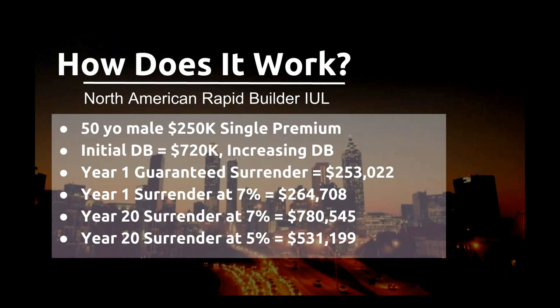Let's look at an example. A 50-year-old male puts $250,000 into this contract as a single premium. It provides an initial death benefit of $720,000, which will increase over time. At end of year one using the guaranteed surrender charges, he still has $253,000. If he happened to get 7% interest in the trailing S&P 500 index and kept insurance charges current, he'd have $264,000. At the end of 20 years, the range under current charges is anywhere from $530,000 to $780,000 — either way, that's a return that protects the client on the downside, provides death benefit and long-term care benefits, and grows the money far better than a CD or money market.